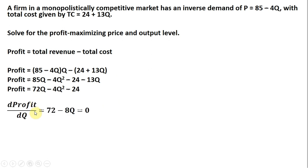Now we take the derivative of the profit function with respect to Q. When we do that, we get 72. Bring down the 2 in front, we get minus 8Q, and the constant term disappears.